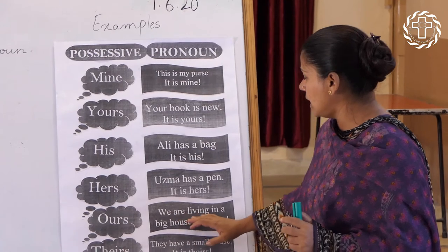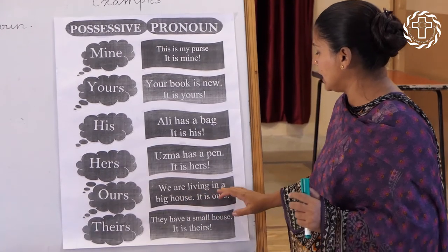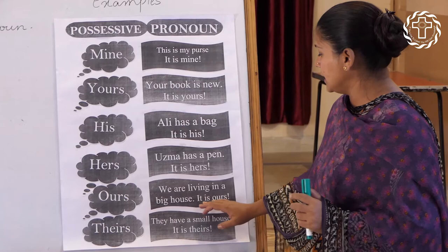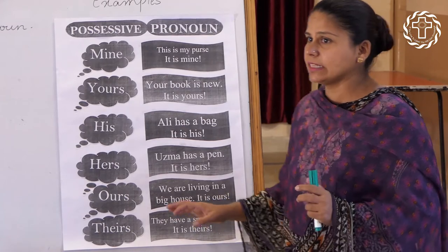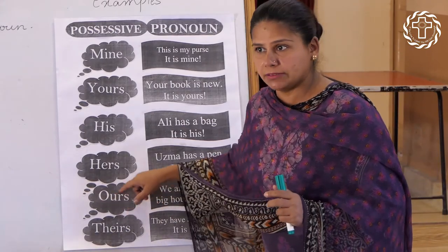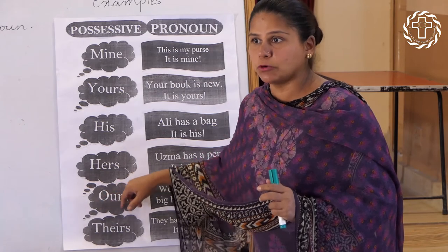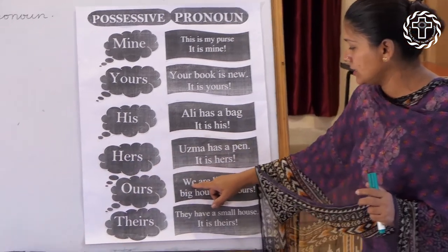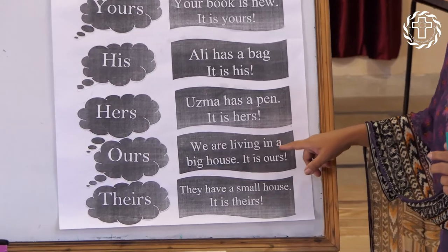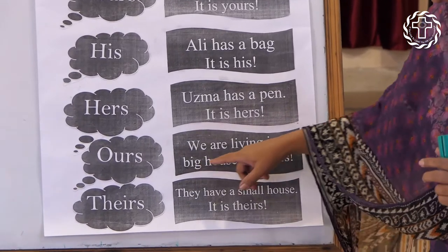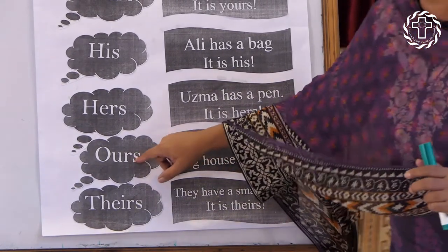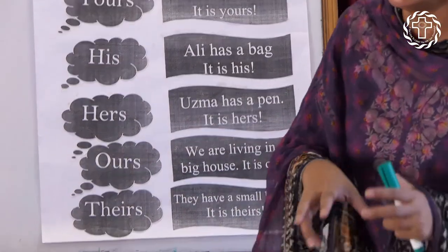Our: We are living in a big house. It is ours. Once again — we are living in a big house. It is ours. 'Our' is used for us.